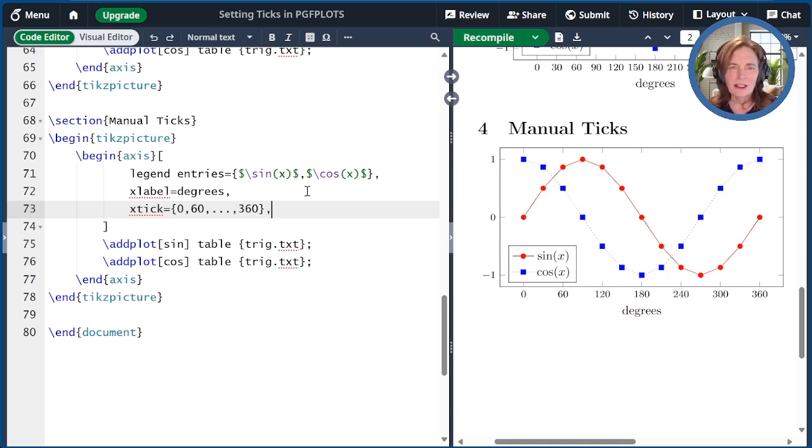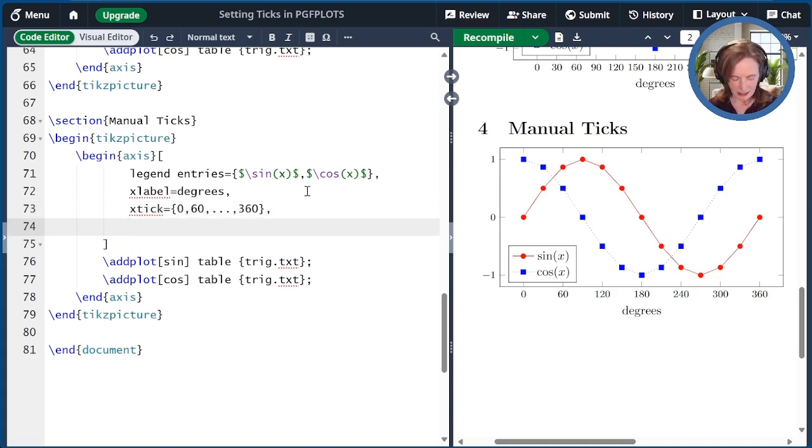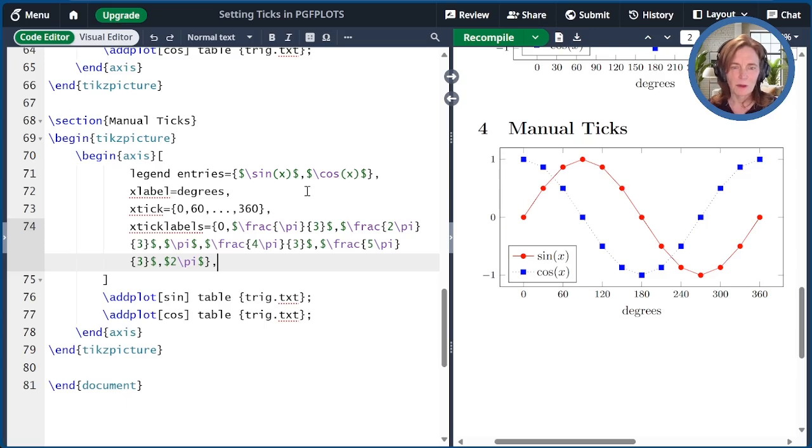When I'm using these kinds of ticks, I could also go ahead and specify the labels. So let's go ahead and do that here. I say x tick labels equals 0, pi over 3, pi over 2, all the way up through 2 pi. One thing I want to point out is that x tick is singular, but x tick labels is plural.